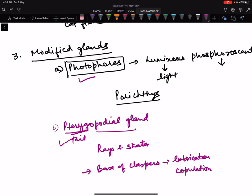Now we are done. Today we covered the comparative account of integumentary glands in cyclostomes and fishes. This is all for this class.